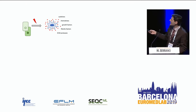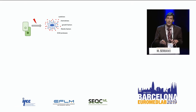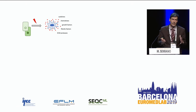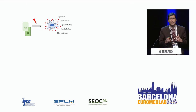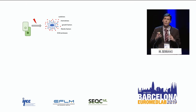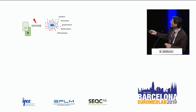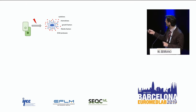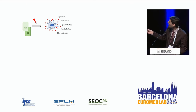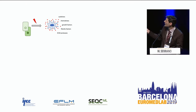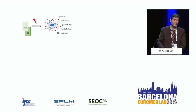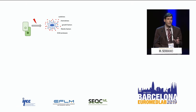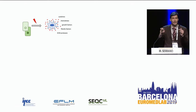Senescent cells are highly secretory. They devote all their resources — they are very active metabolically — to secrete proteins. They are not doing this by mistake; this is part of the program. They are trying to alarm and alert the tissue that there was severe damage. They secrete cytokines, chemokines, and growth factors. These growth factors are used by surrounding cells to repair the tissue. There are also fibrotic factors like TGF-beta and proteases for the extracellular matrix. All of this signals that a tissue has to be repaired. Senescent cells are the ones that notify the organism that repair is needed.